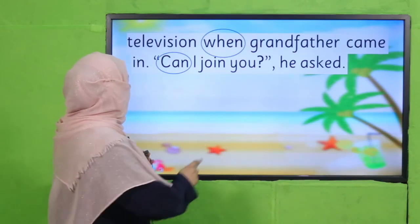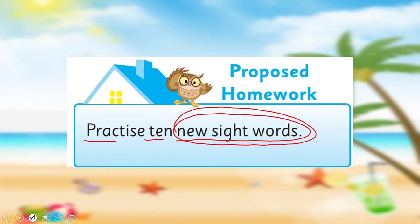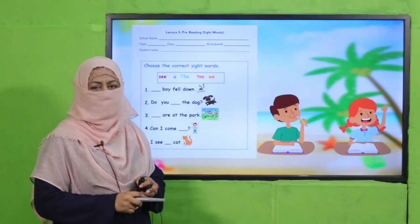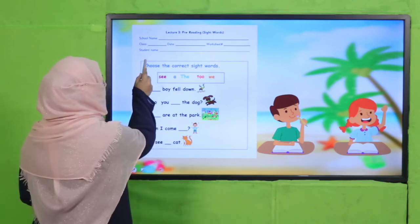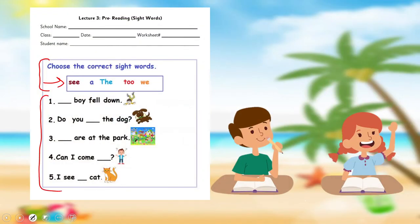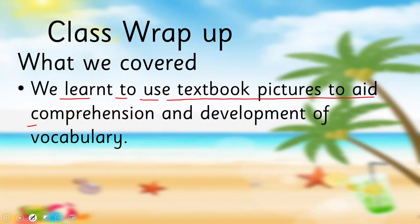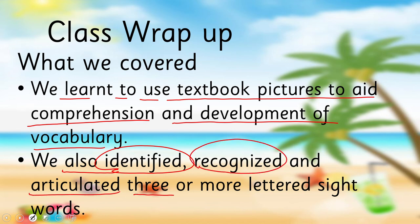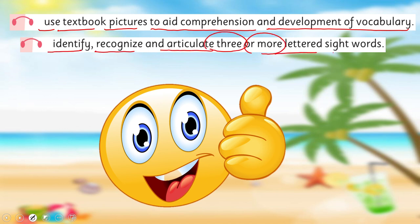It is time for your homework. You will practice 10 new sight words. Fellow teachers, this worksheet, lesson plan, and PowerPoint presentation links are given — please click, download, and provide a printed worksheet to students for practice. Students, you have to choose the correct sight word from the list and complete the sentence. So what we learned today: we learned to use textbook pictures to aid comprehension and development of vocabulary, and we identified, recognized, and articulated three or more lettered sight words. In this way we achieved our SLOs.